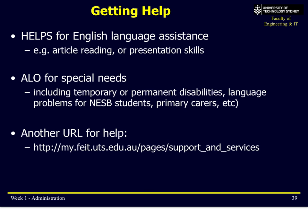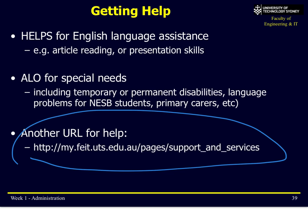A few other things you might need for help: if you have poor English, there's a service at UTS called HELPS for English language assistance — not so much needed for this subject. If you have special needs, contact your academic liaison officer, which is me. The special needs service will help you organise extensions or special exam conditions. Check the support and services link.